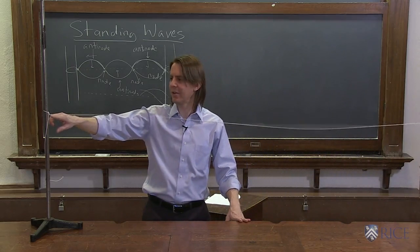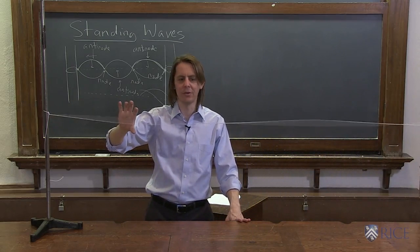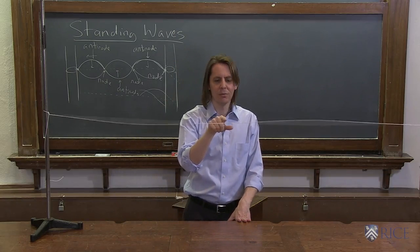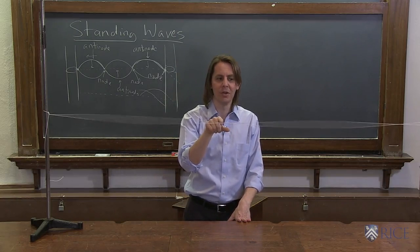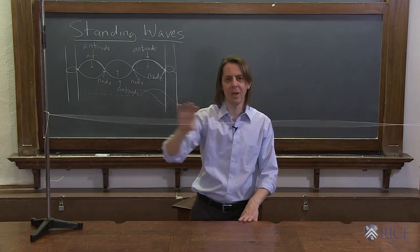And you can actually see there are regions that are doing what we said. Here at the end, it is clamped. And that's a node. And then it gets kind of big. That's an anti-node. And then look, right here is a region in space where it isn't moving. That's a node. Then you come over here and you have an anti-node. This really does happen. This is a standing wave.